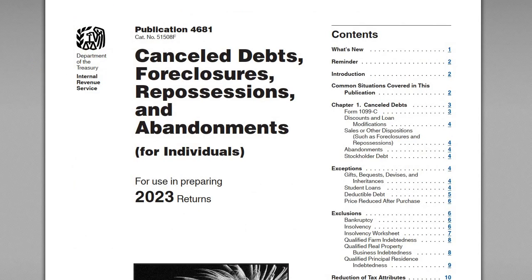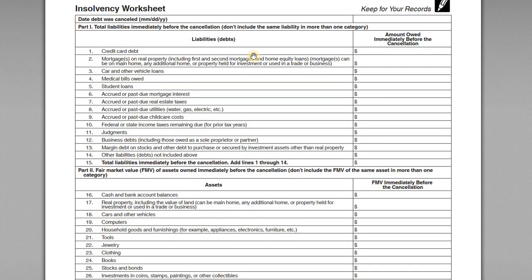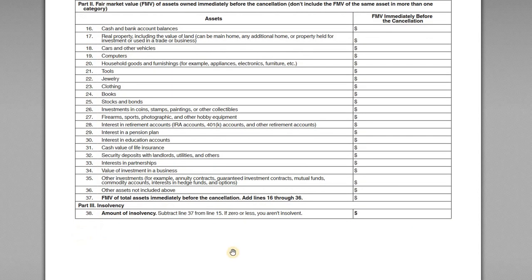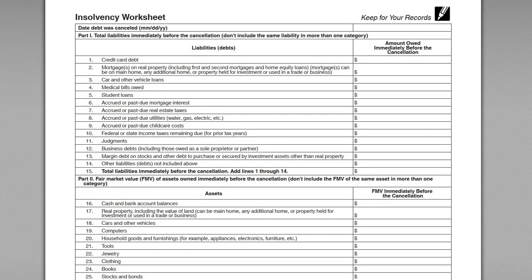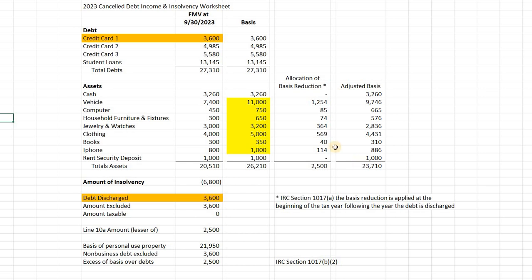IRS Publication 4681 has a good insolvency worksheet — if you scroll about seven or eight pages in, they have an insolvency worksheet where you list all your liabilities immediately before the cancellation, list all your assets at fair market value immediately before the cancellation, and then determine whether or not you are insolvent based on whether your liabilities exceed the fair market value of your assets.